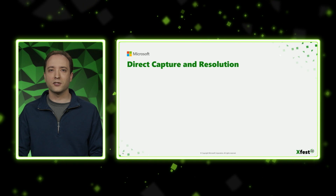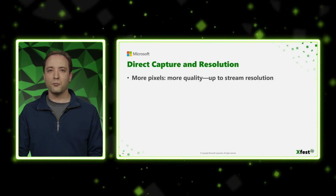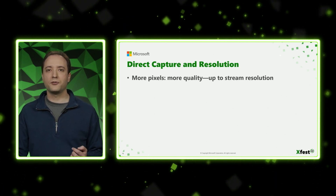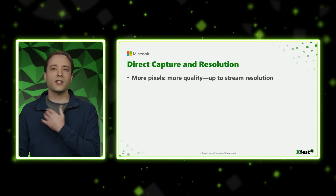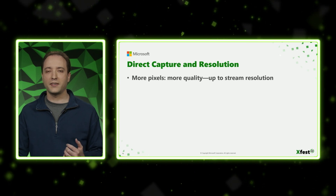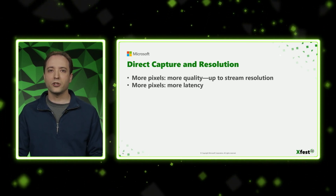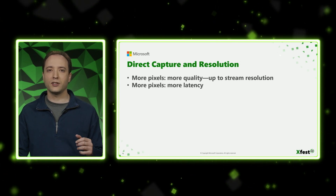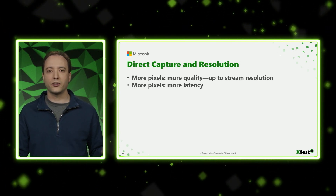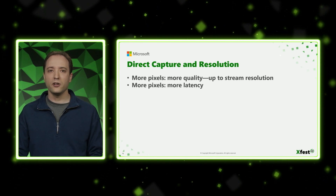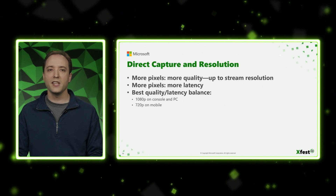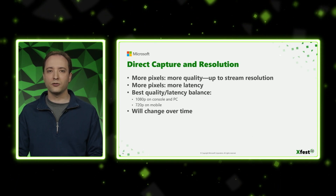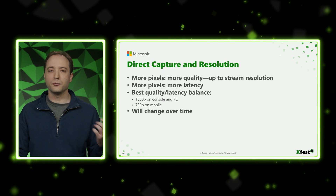So let's talk a little bit about direct capture and resolution. As you likely know, more pixels mean more quality — but in streaming, that's only up to the stream resolution. If your game is rendering at a higher resolution than the stream resolution, we have to scale it back down, and at that point we might be introducing scaling artifacts. By a similar token, more pixels also means more latency — both because we have to spend time doing the scaling and because it can spend time in other steps of the streaming process. So we try to achieve the best quality-latency balance when streaming. Today, that's 1080p on console and PC, and 720p on mobile. However, that's something we expect will change over time based on different devices, network conditions, and improvements to the streaming stack.